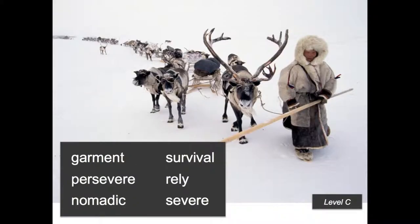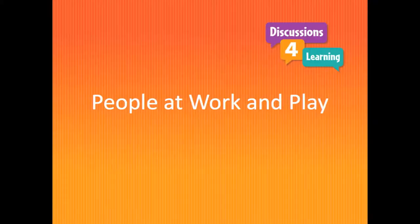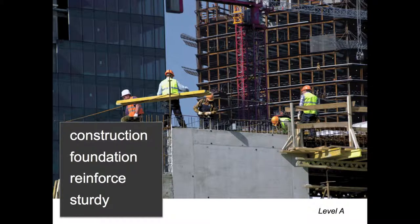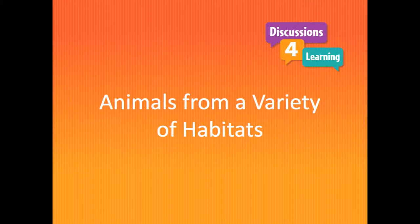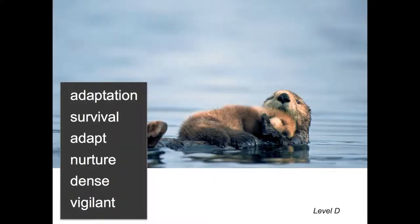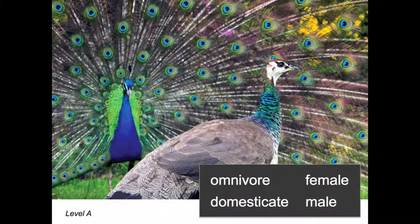And how the nomadic people in Siberia persevere and survive the severe cold. Students will see people at work and play from across the USA and around the world, including construction workers building a skyscraper, and cricket players in Zimbabwe — a great way to compare cricket to baseball while practicing the words similar and dissimilar. Finally, students will discuss brilliant images of animals from a variety of habitats, including this sea otter with her newborn pup in the Gulf of Alaska. Students discuss how the mother sea otter nurtures her pup. And peafowl in courtship display as students discuss the differences between the male and the female.